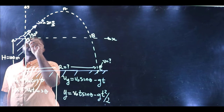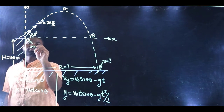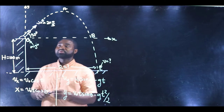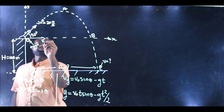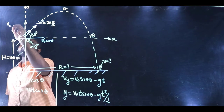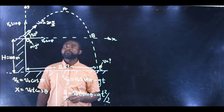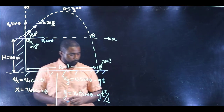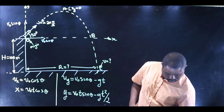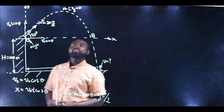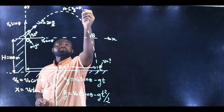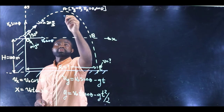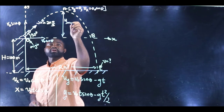Remember that we have taken our origin to be at the launch point. Just like we did before, we can resolve v-naught into two components: the horizontal component is v-naught cosine theta and the vertical component is v-naught sine theta. At point A, vy is equal to zero, and vx remains equal to v-naught cosine theta.